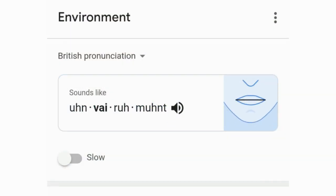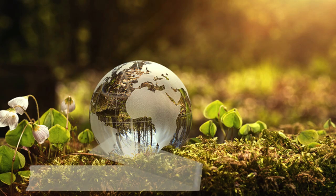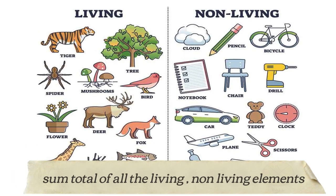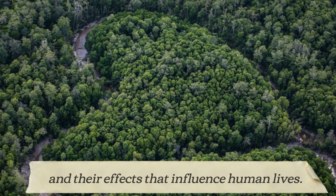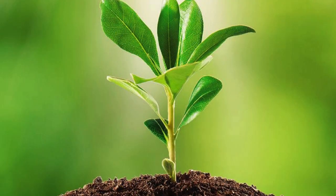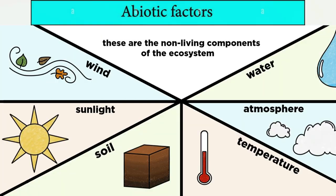Environment can be defined as a sum total of all the living and non-living elements and their effects that influence human life. While all living or biotic elements are animals, plants, forests, fisheries and birds, non-living or abiotic elements include water, land, sunlight, rocks and air.